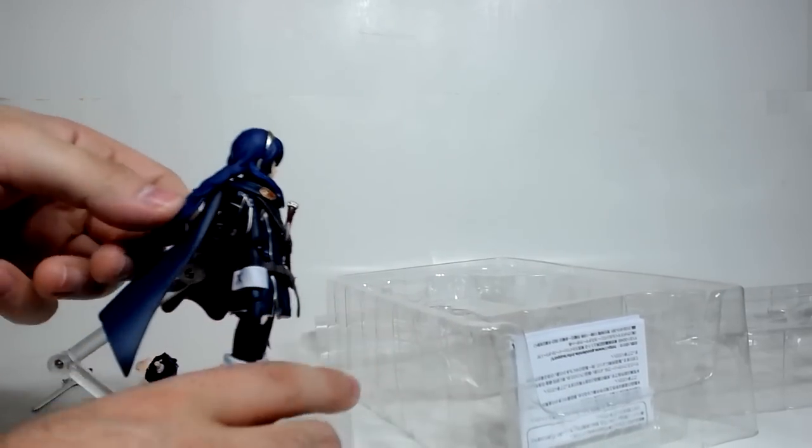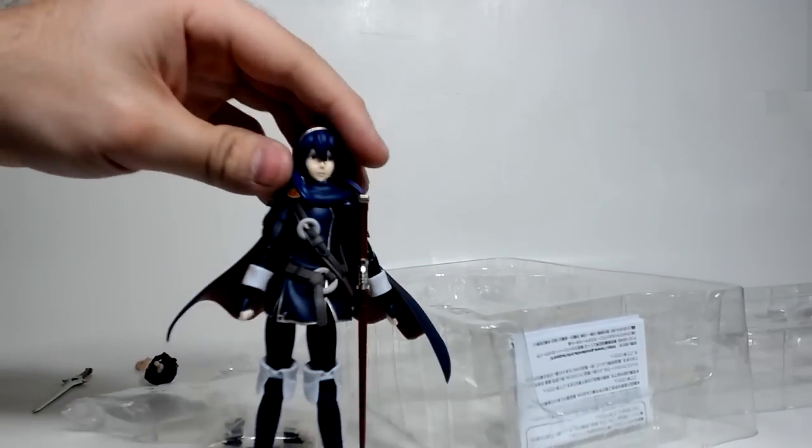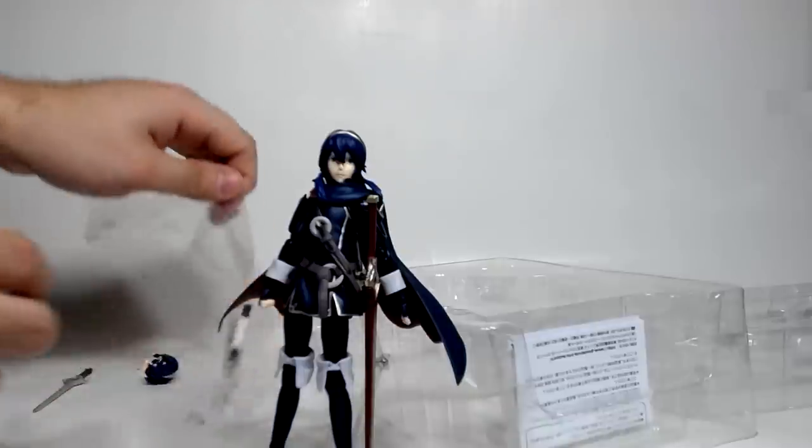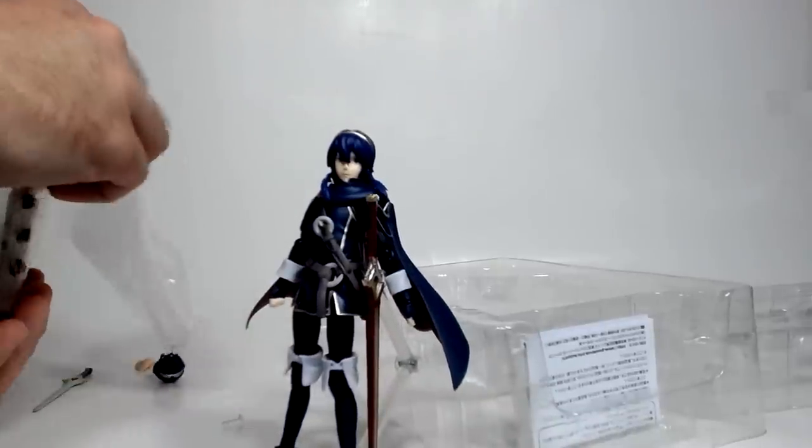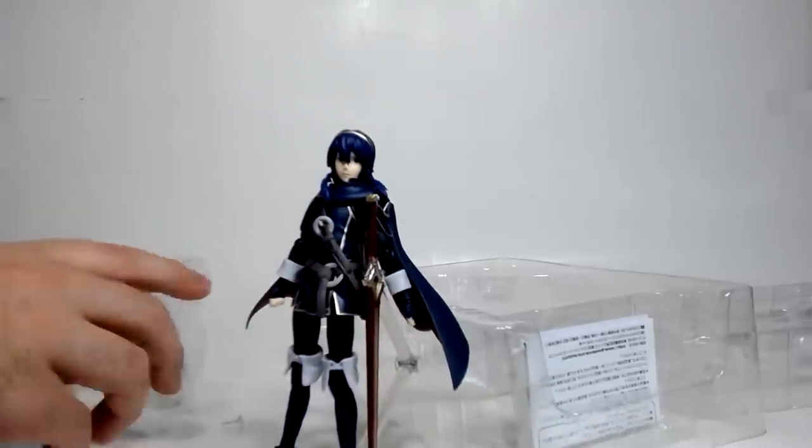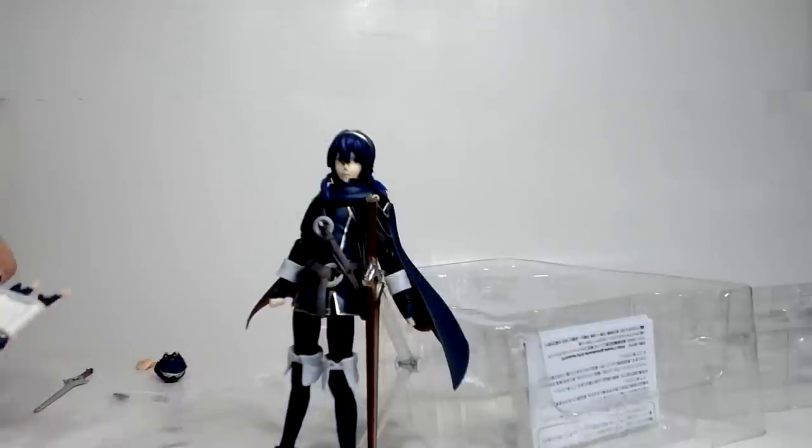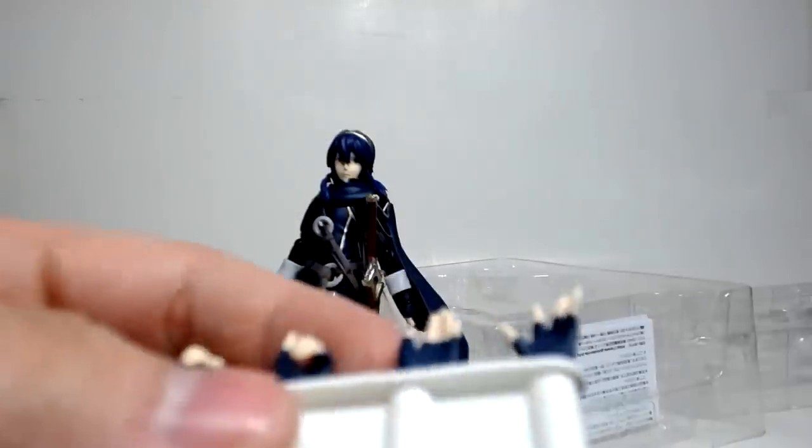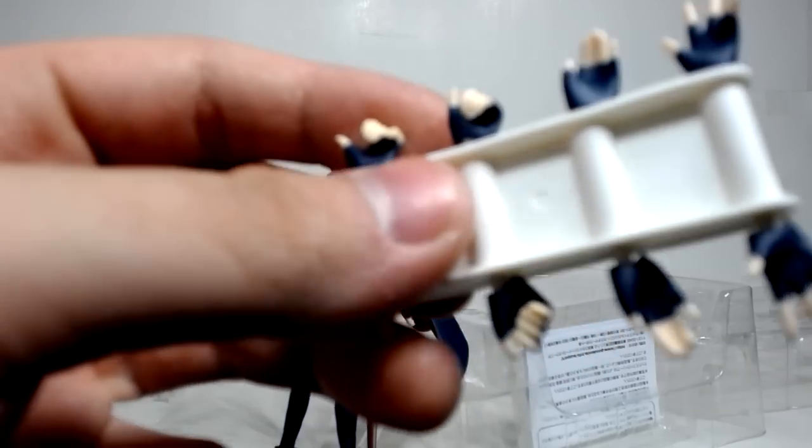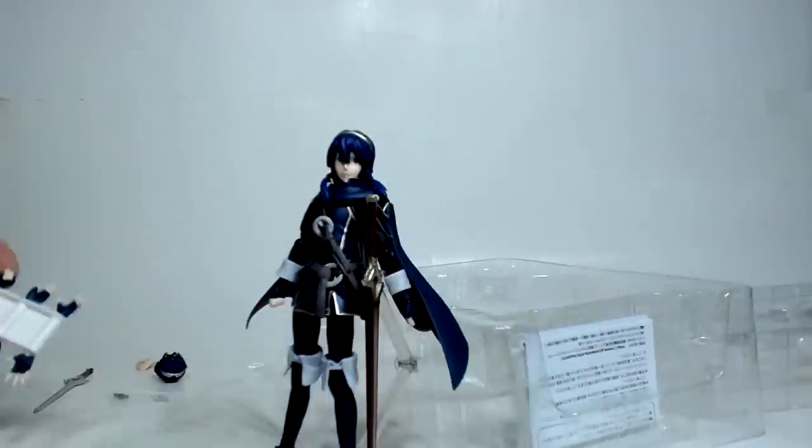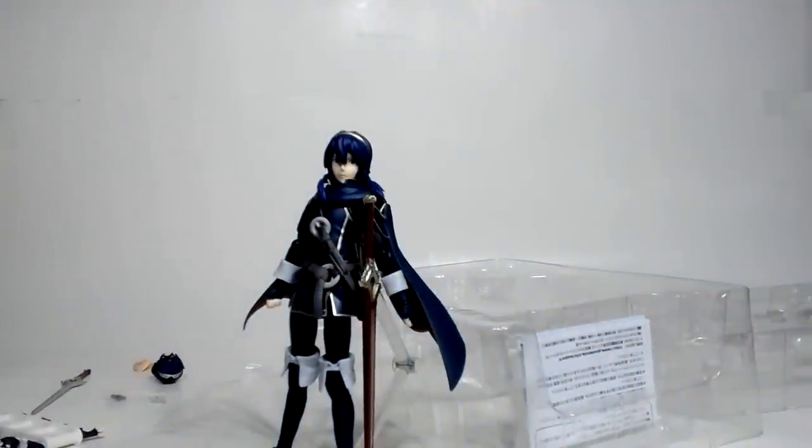I still wish there was hair articulation right here. Then we got our extra hands. I like how they put this in a little separate sleeve. Thank you, I don't want to lose that. These are our extra hands. We got extra palms, open palms, then relaxed hands, then sword-wielding hands, and another sword-wielding hand. Let's actually get her to hold her sword.